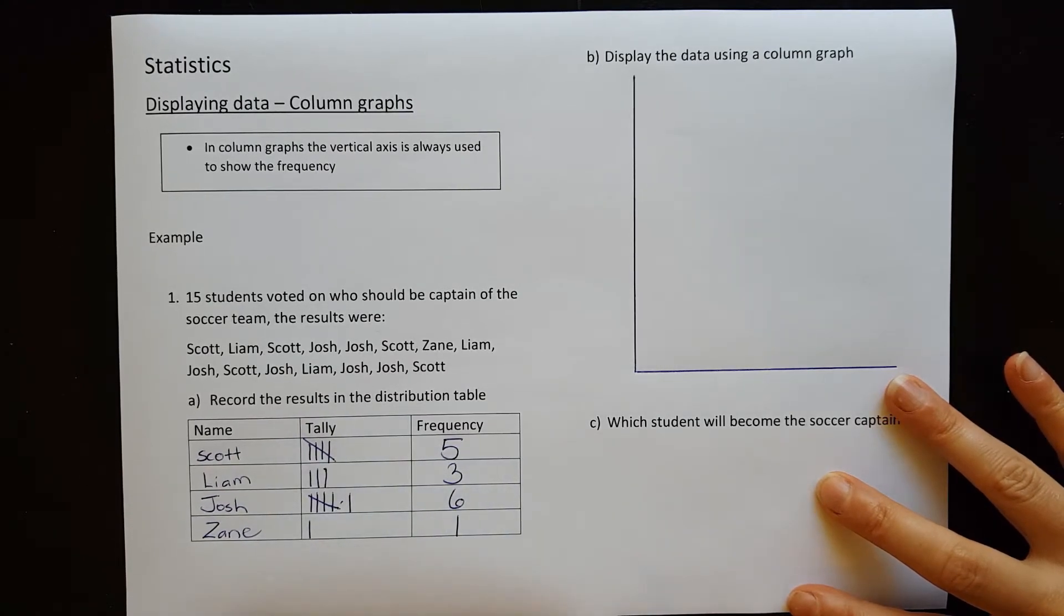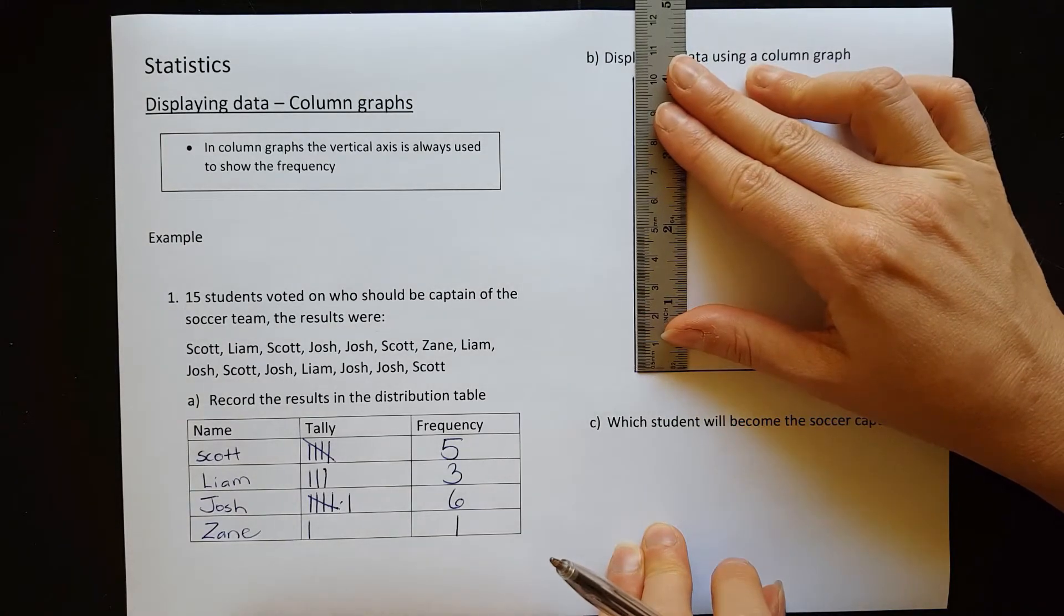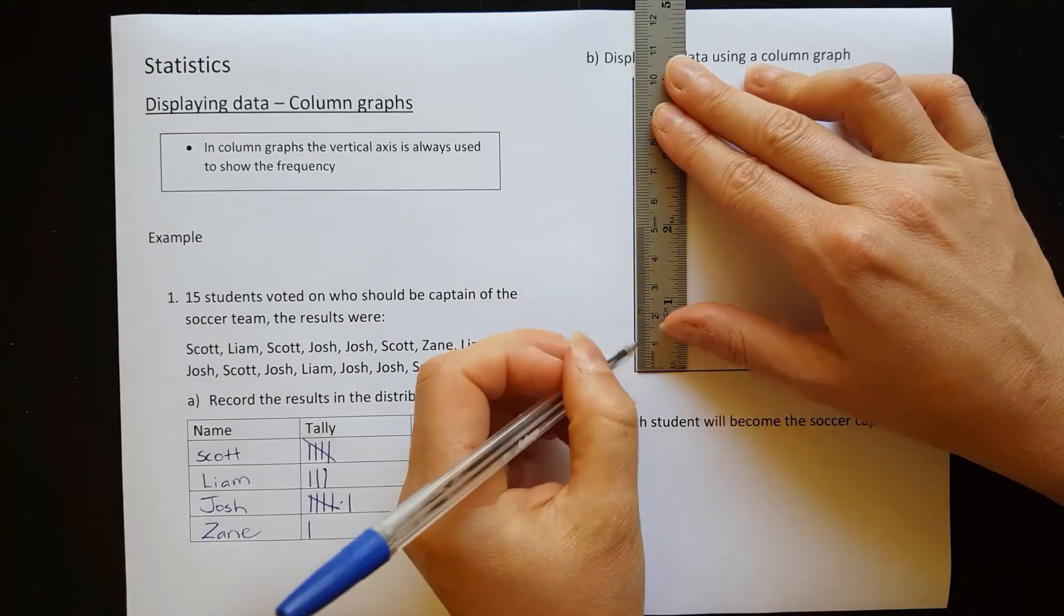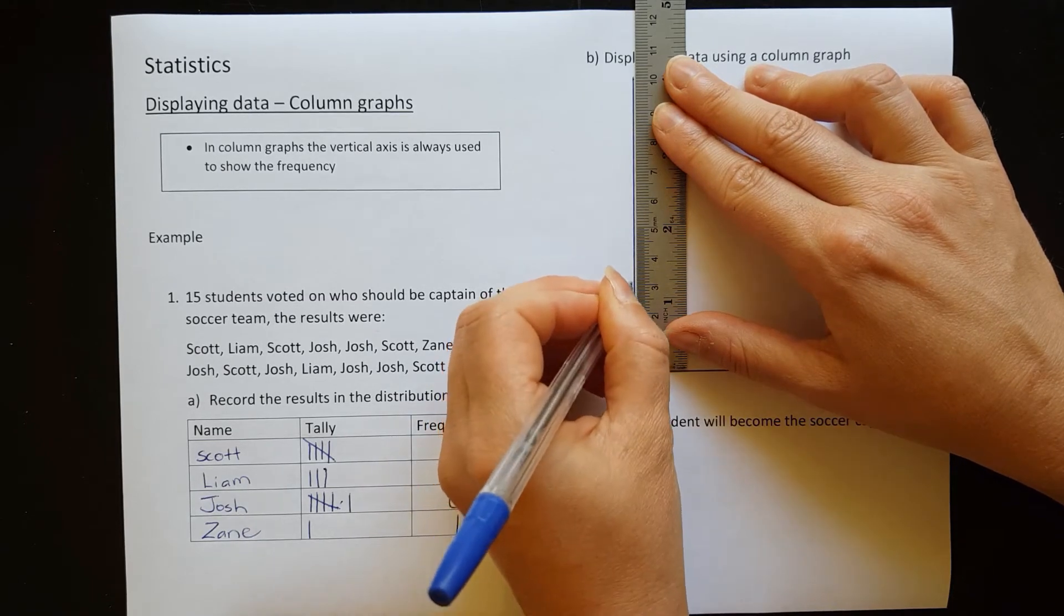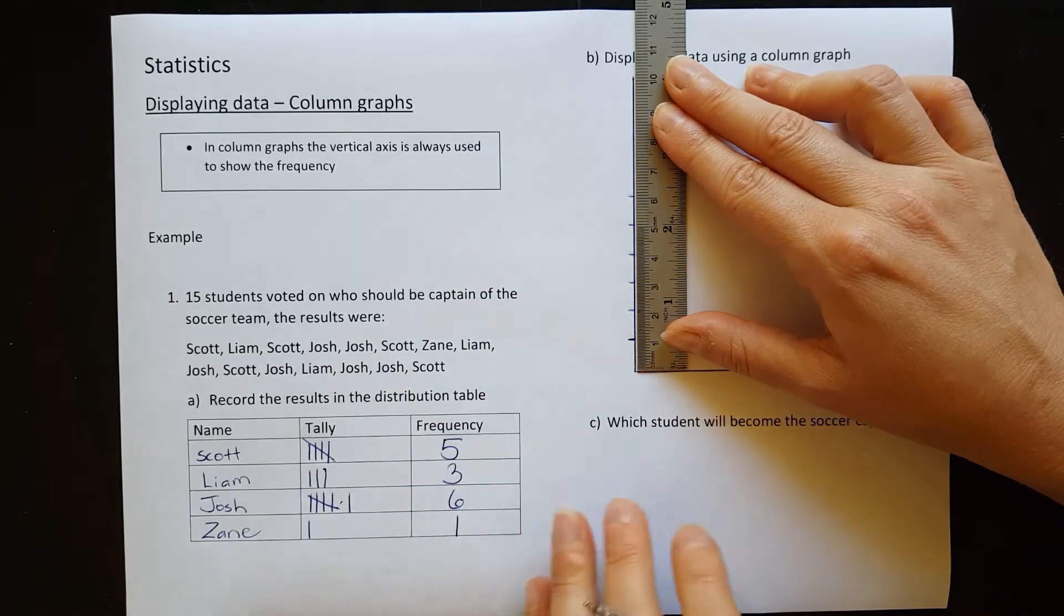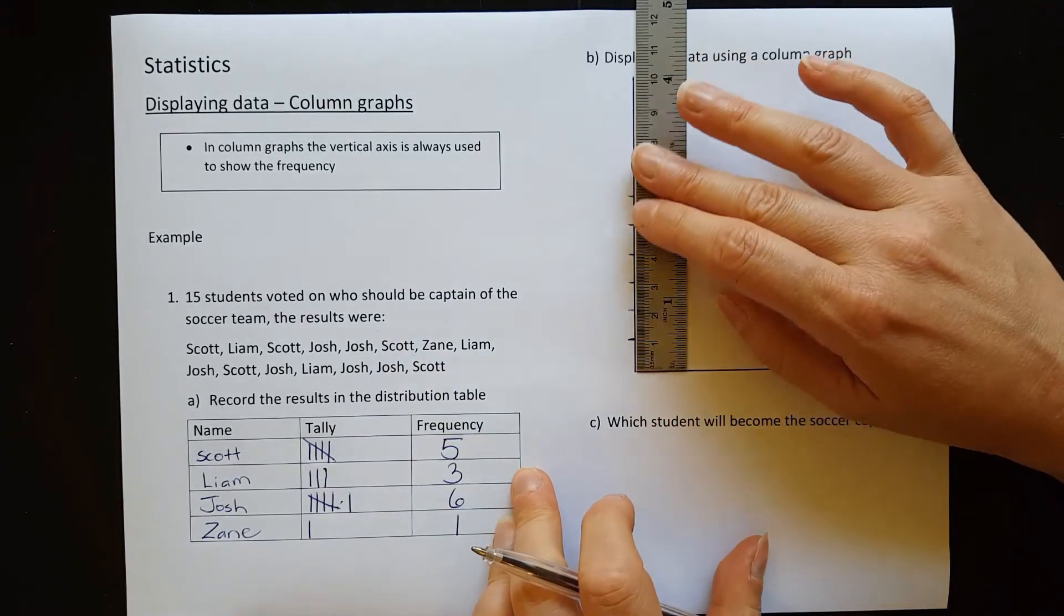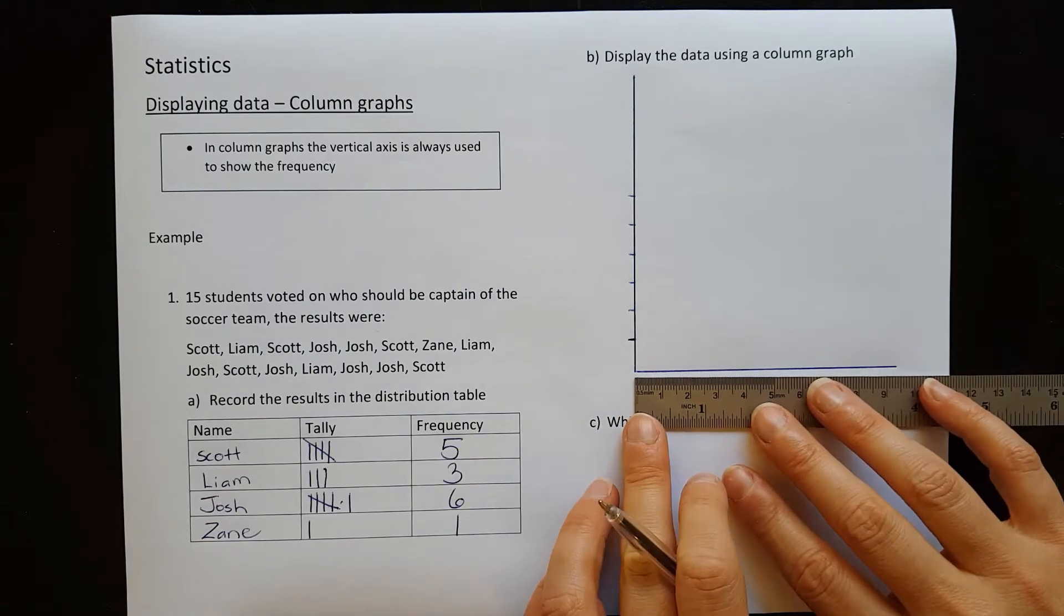So remember the frequency must always be on the vertical axis. Our highest frequency was six. So using your ruler, you want to measure spaces going up to six. Often it's a good idea to use one centimeter if you have enough space. If you're really squashed for space, you might want to use half a centimeter or even a different scale at times.